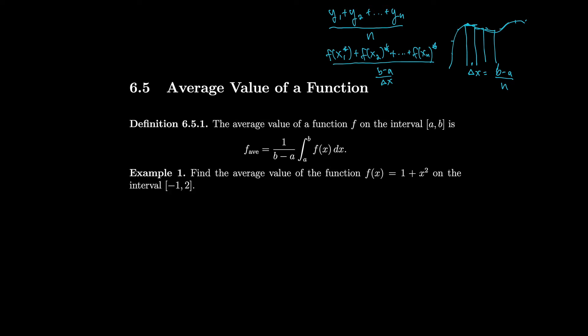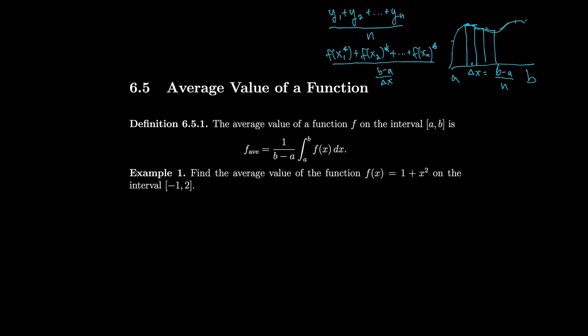You can also see this geometrically as the area underneath the curve — that's the integral part — divided by b minus a, which is how long the curve is. If here's a and here's b, then b minus a is the length. So you could think of this geometrically as area divided by width equaling height. But since height is not uniform, area divided by width gives you the average height.